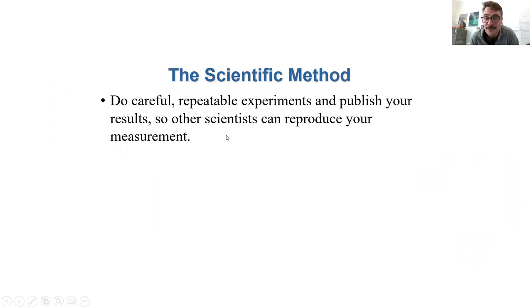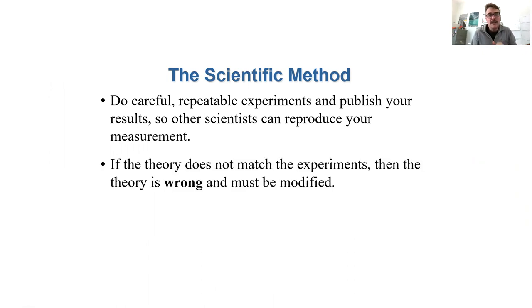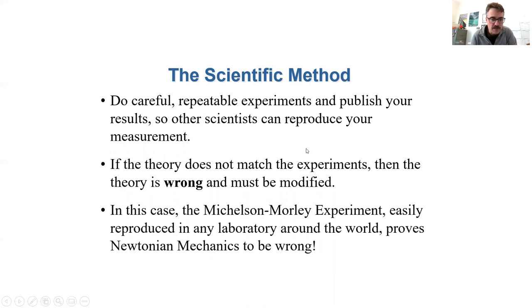Okay, so the moral of this story is a little tale about the scientific method. What you do is you do careful, repeatable experiments and publish your results of what you see. If the theory that's been before doesn't match the experiments, in this case it was Newtonian mechanics was not matching what they were seeing, then the theory is wrong and must be modified. And that's what Einstein did. He came along and came out with relativity, which is different than Newtonian mechanics.